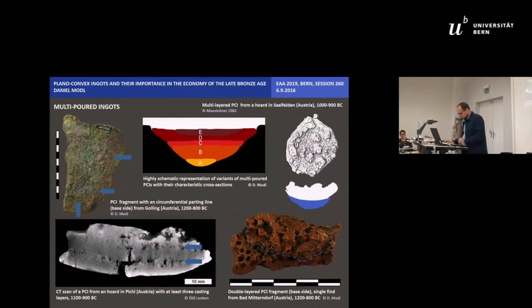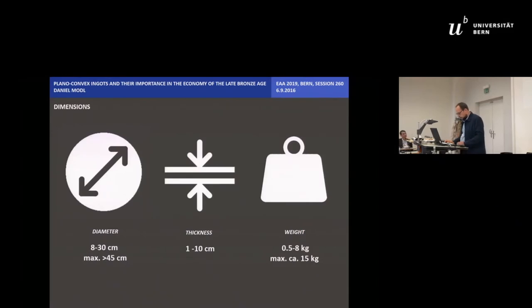The primary form and dimensions of the PCI results of many factors like the shape, slope and size of the casting mold, the material of the mold and the conditions during cooling. Their diameter mostly varies between 8 and 30 cm while their thickness ranges frequently between 1 and 10 cm.